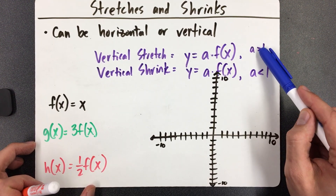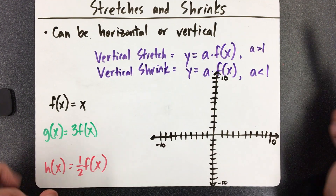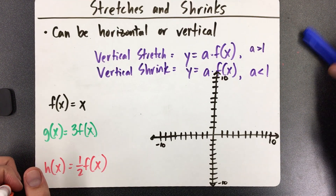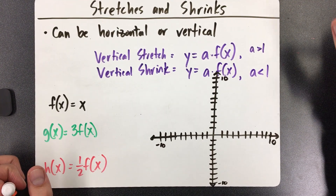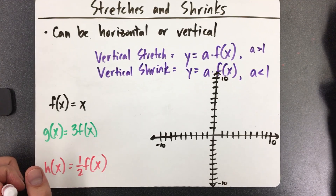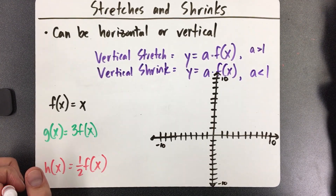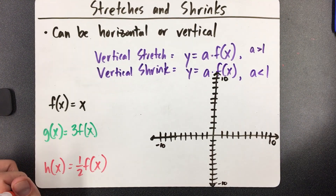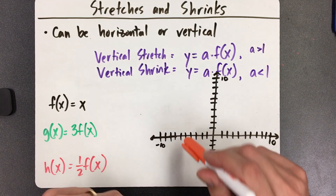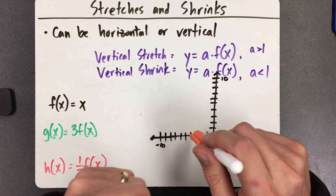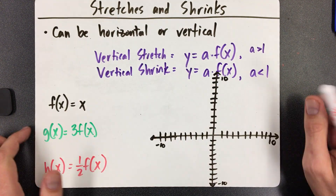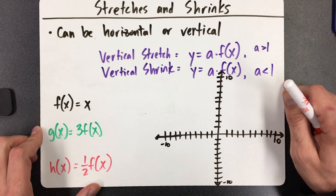How do you know if it's a stretch or a shrink? You just look and see how big the letter A is. If that letter A is a number greater than 1, we're going to call it a vertical stretch — we're going to stretch it up. If it is a number less than 1, usually between 0 and 1, that's going to shrink it down. On these vertical ones, the x-intercept — wherever the line crosses the x-axis — is going to stay the same.